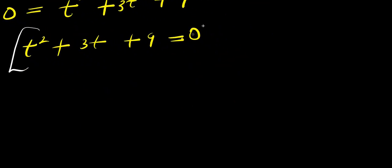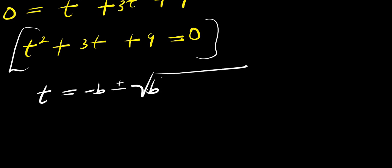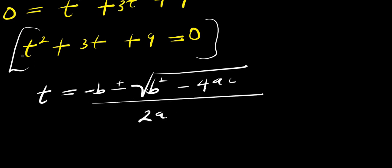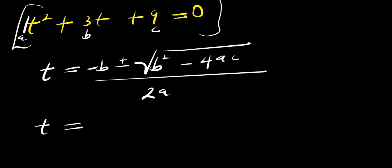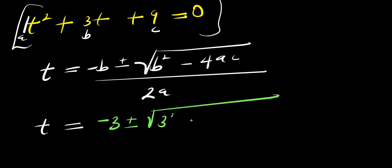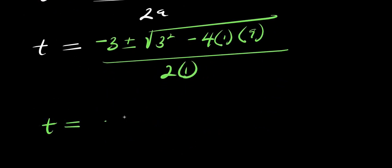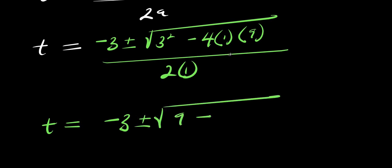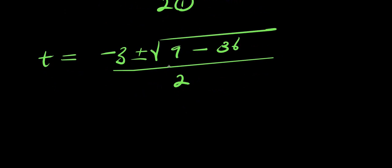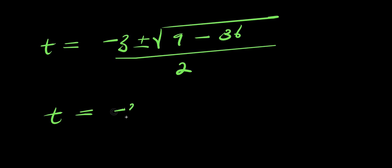Now we need to solve this quadratic equation using the quadratic formula: t equals negative b plus or minus square root of b squared minus four ac, all over two a. This is my equation: a equals one, b equals three, c equals nine. So t equals negative three plus or minus square root of three squared minus four times one times nine, divided by two times one. That gives us nine minus thirty-six, which is negative twenty-seven, divided by two.